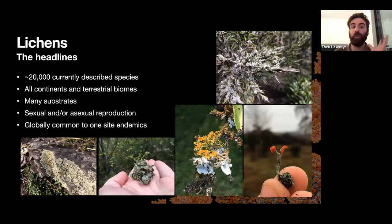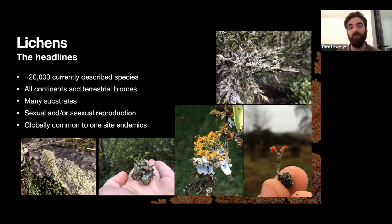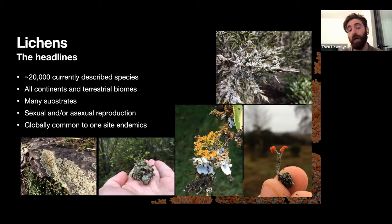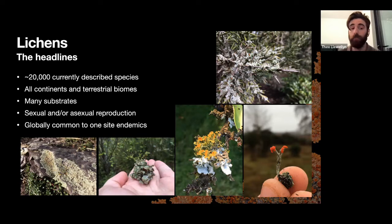Some really quick headlines about lichens in general: there are currently about 20,000 described species, but this is likely a major underestimate of actual diversity. Lichens and fungi in general have received much less attention than plants and animals, and they grow in very harsh habitats that are often underexplored. Lichens are found across all continents and in pretty much every terrestrial biome habitat you can think of.